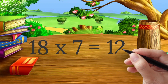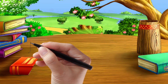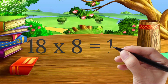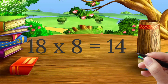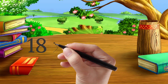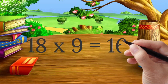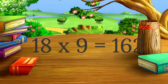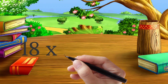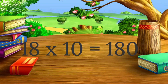18 seven's are 126. 18 eight's are 144. 18 nine's are 162. 18 ten's are 118.